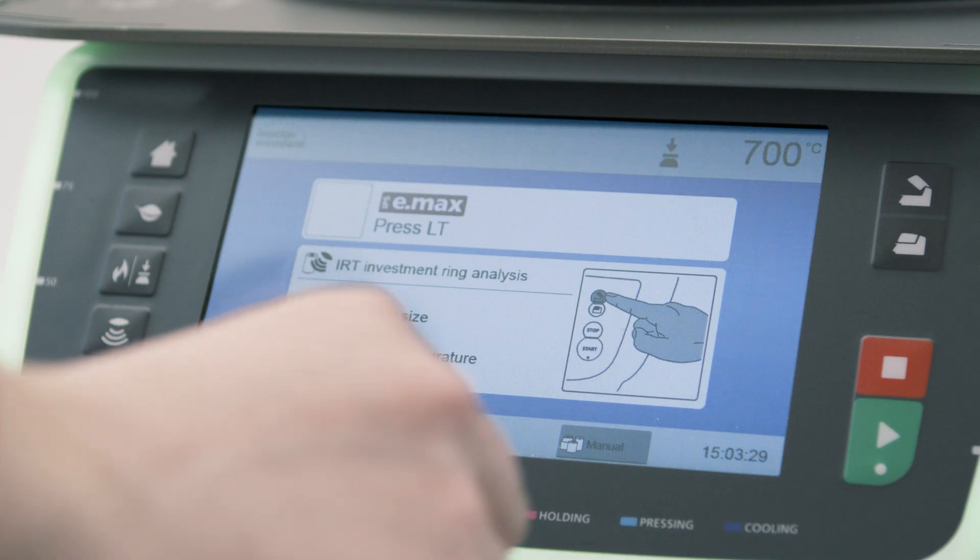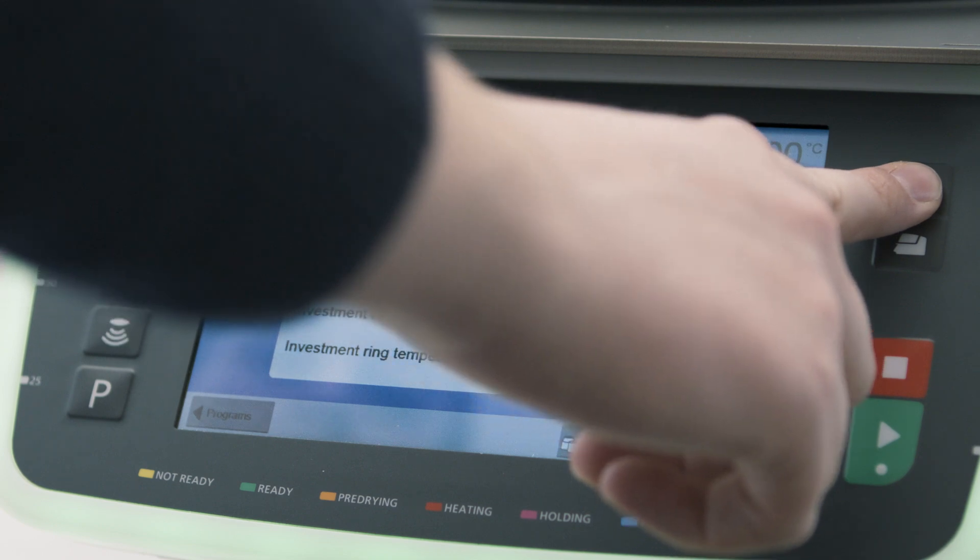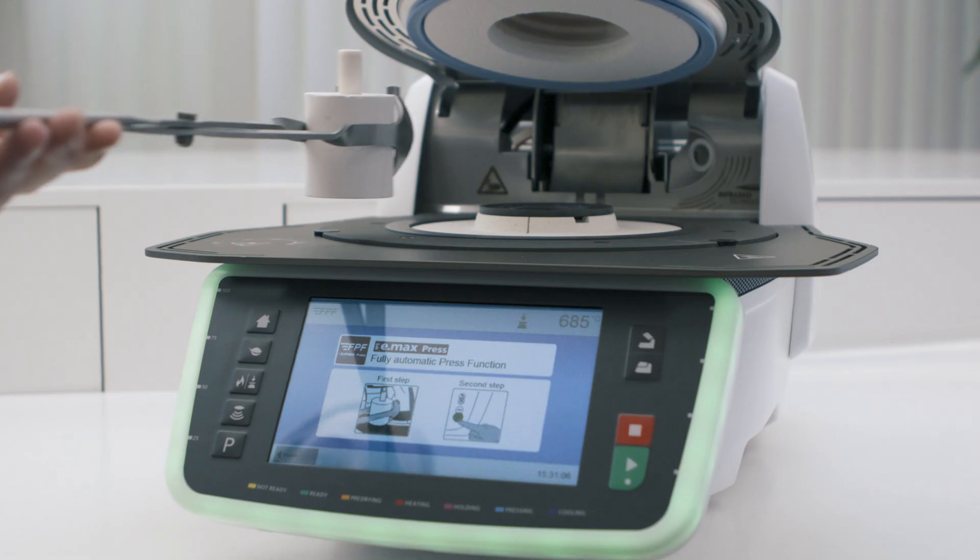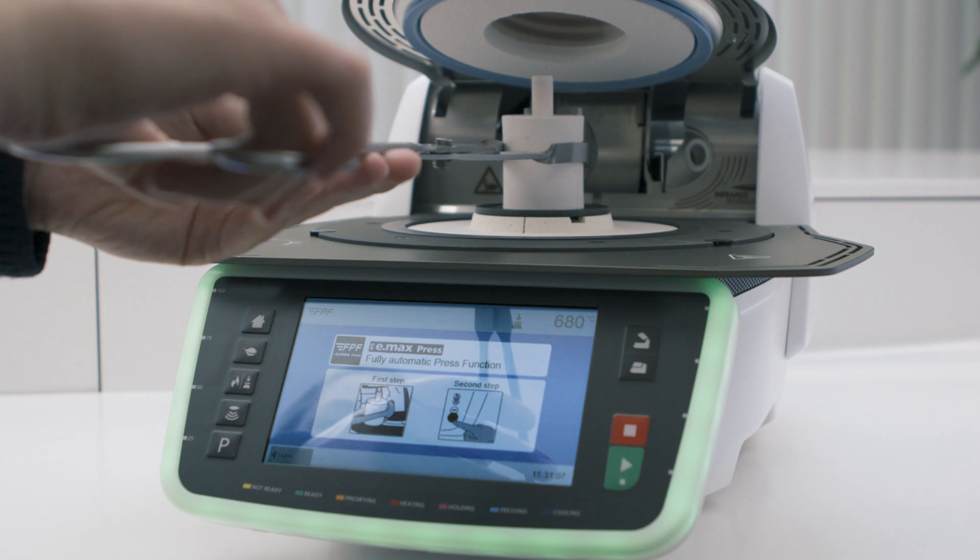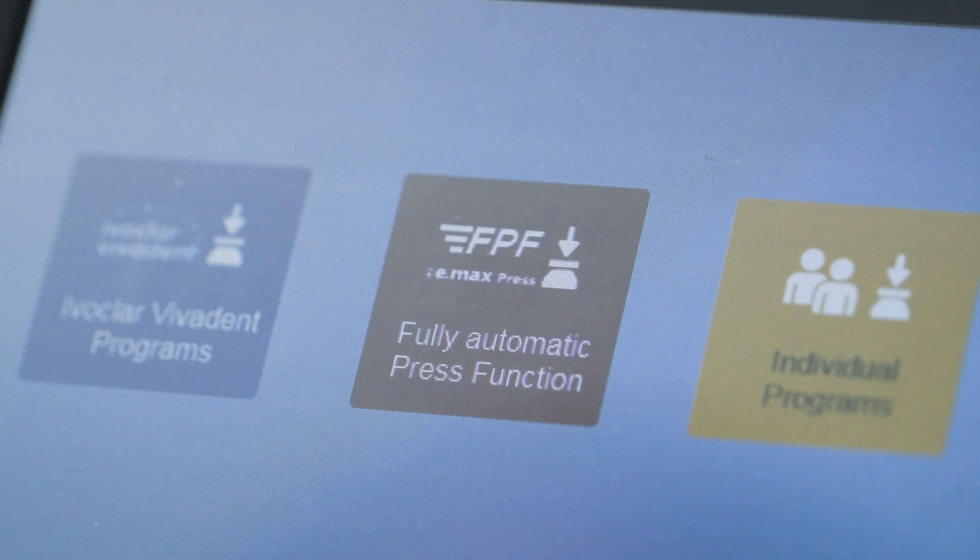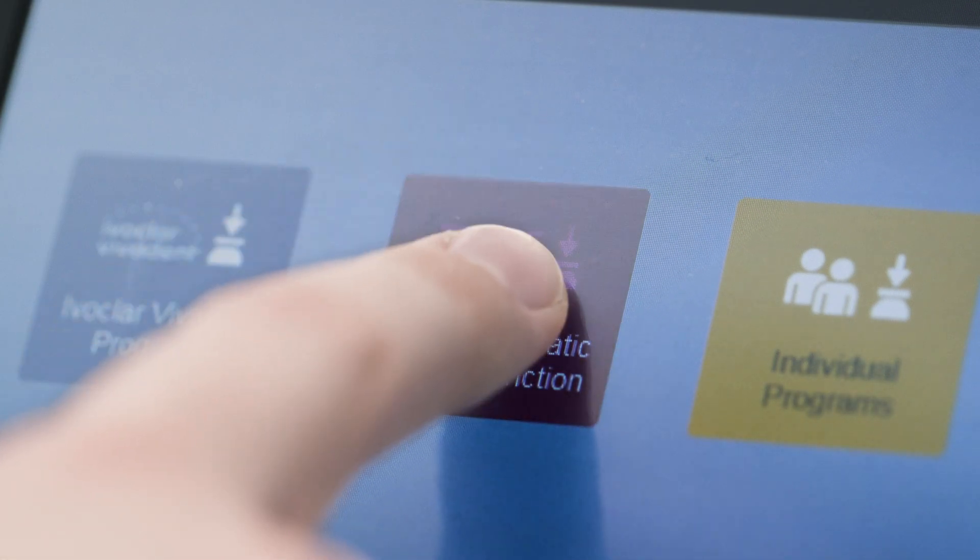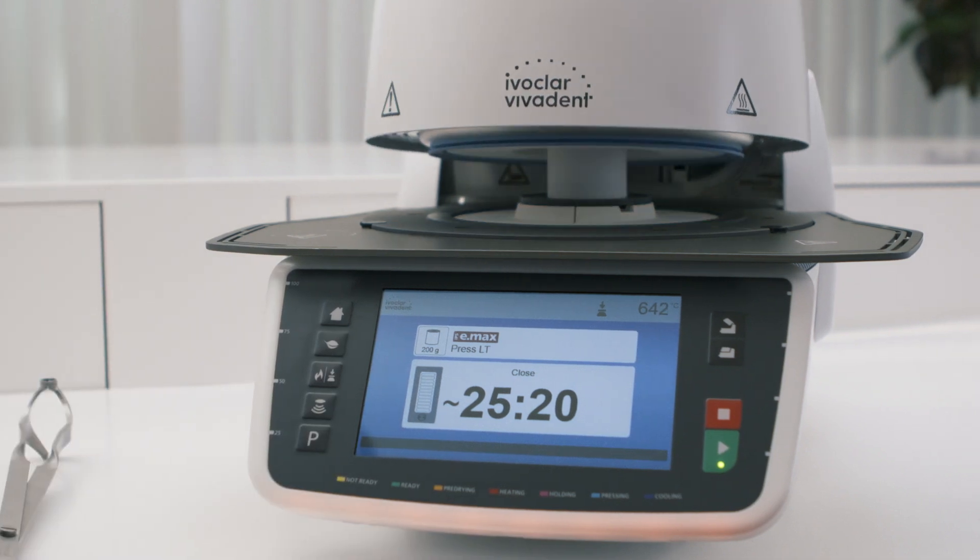To conduct a press procedure by means of the FPF Fully Automatic Press Function, open the furnace head and load the furnace with the correctly preheated investment ring. Press the FPF button on the display. Press the Start button to start the press process.